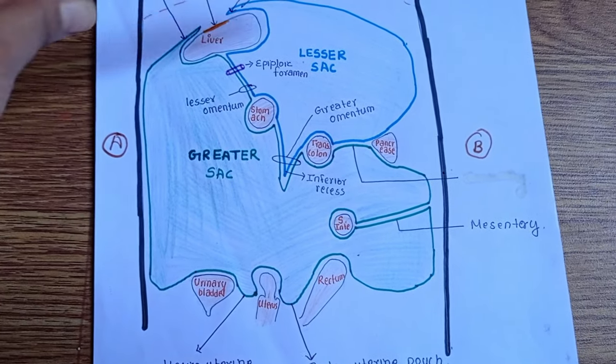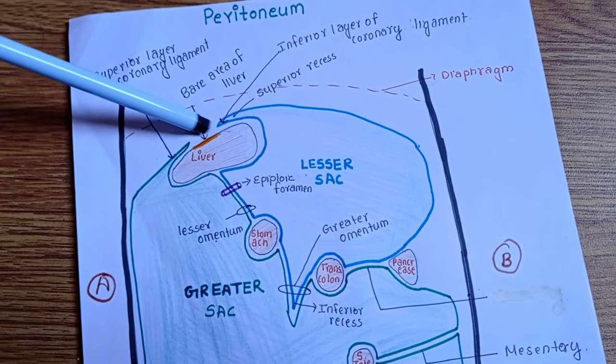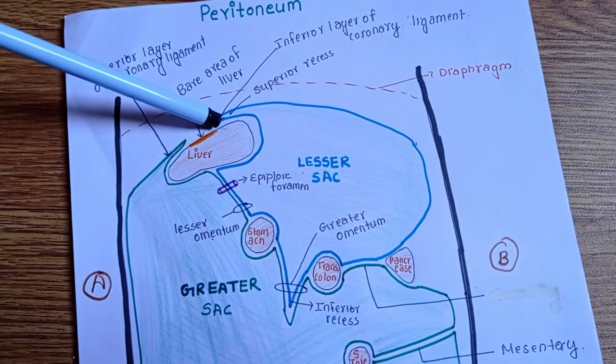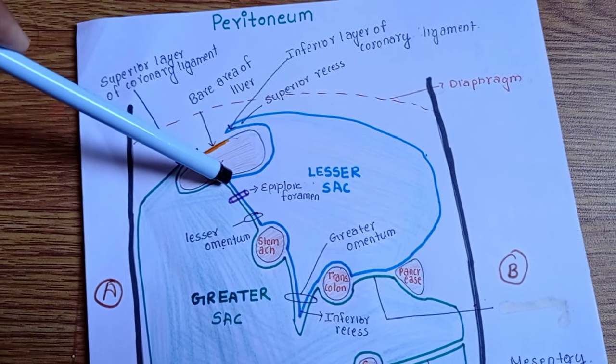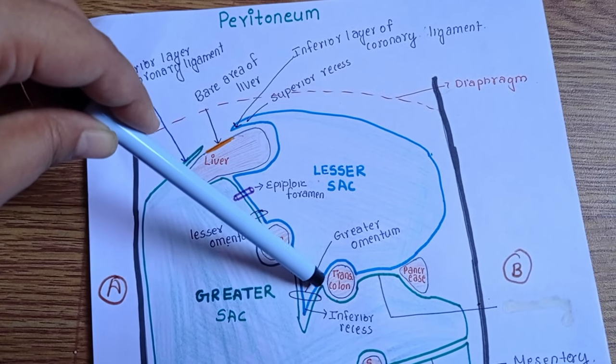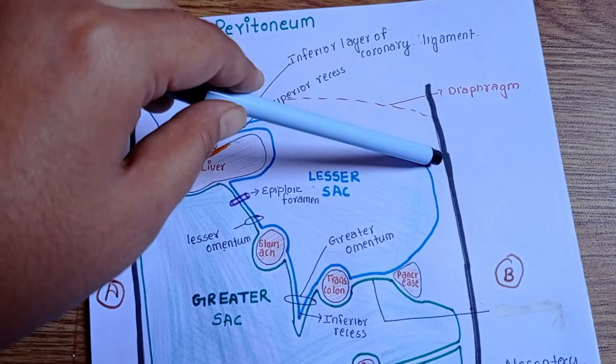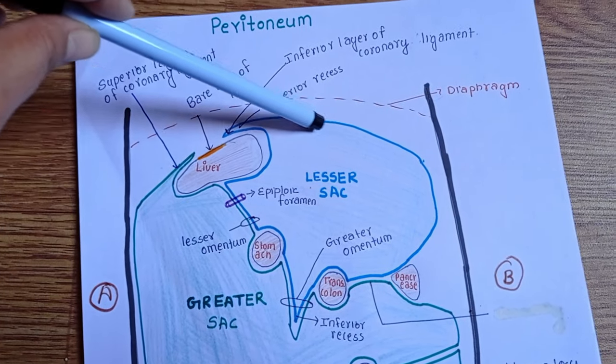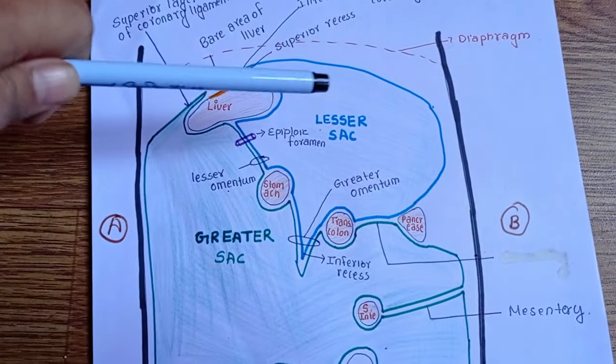Again let's go to the lesser sac. We have here the bare area of the liver. On the side of it, let's start from here. It moves downward like this giving its covering to the stomach, then to the transverse colon, then to the pancreas like this, then it moves upward and then joins here. This one is our lesser sac.